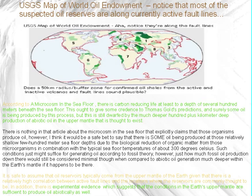There is nothing in that article about the seafloor microcosm that explicitly claims those organisms produce oil. However, I think it would be a safe bet to say that some oil is being produced at those relatively shallow few-hundred-metre seafloor depths due to the biological reduction of organic matter by microorganisms, in combination with typical seafloor temperatures of about 300°C. Such conditions might suffice for generating oil according to fossil theory, though fossil oil production there would still be minimal compared to abiotic oil generation deeper within the earth's mantle.